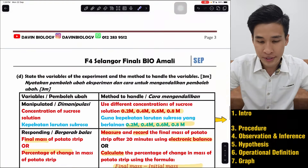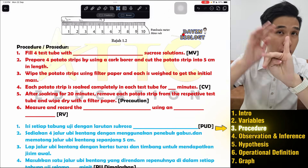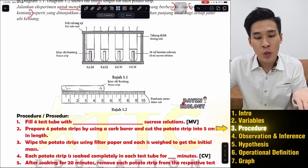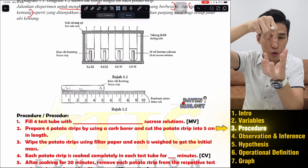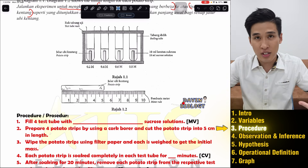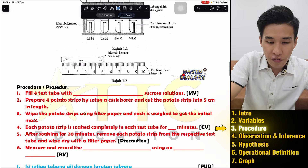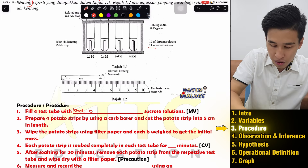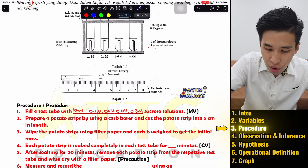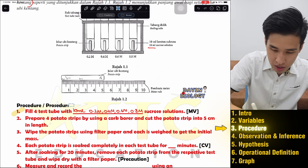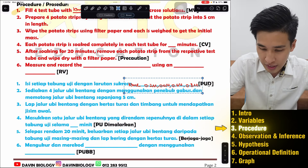Now that we know the three variables, let's write the procedure. First, fill four test tubes with 10 ml of 0.2 M, 0.4 M, 0.6 M, and 0.8 M sucrose solution. By mentioning all the values of the MV, you get the MV mark — one mark. In BM it is exactly the same.